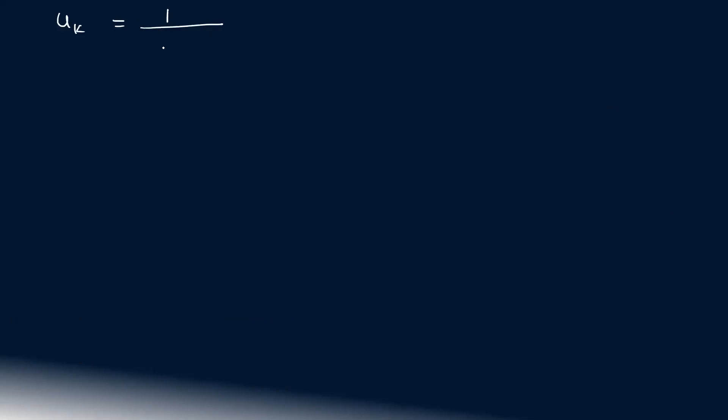We can test this: uk is equal to a polynomial function in the denominator, specifically k into k plus 1, which is like k squared plus k. We can use the limit comparison test for this polynomial form.